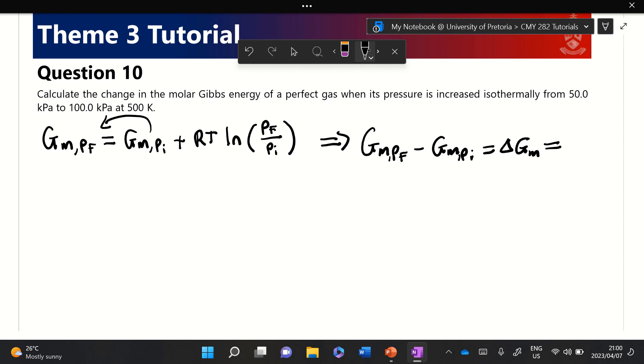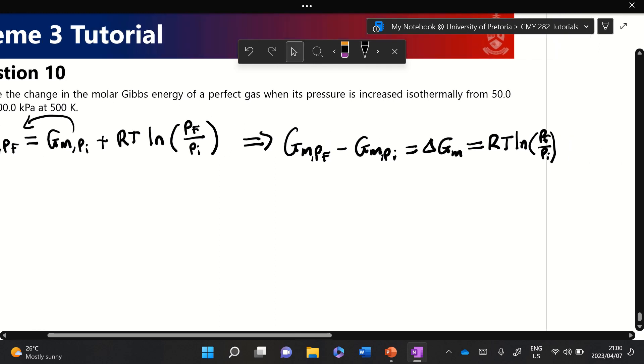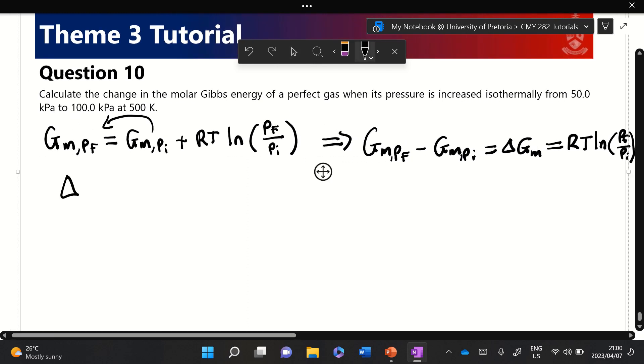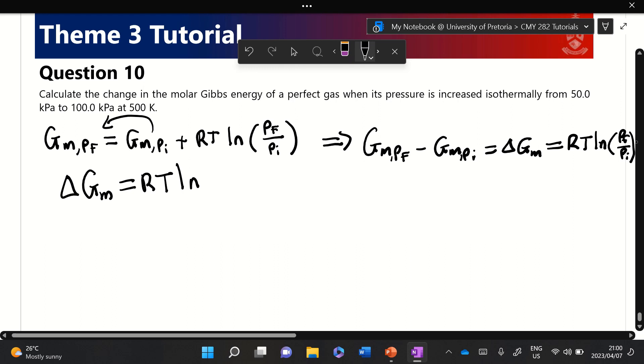We write Pf over Pi, Tf over Ti, Vf over Vi—one would think we have developed some sort of notation for that by now, but we haven't yet. Anyway, maybe I should develop a notation for that, but that would just confuse you once again. So anyway, ln Pf over Pi.